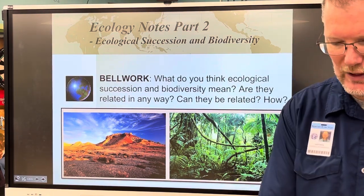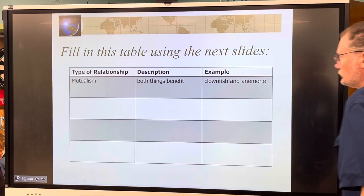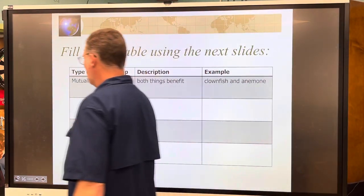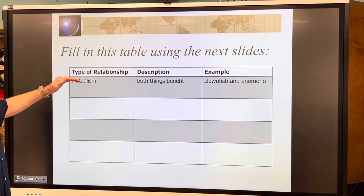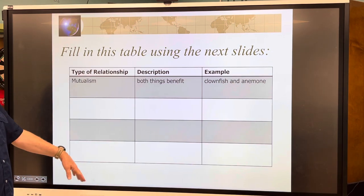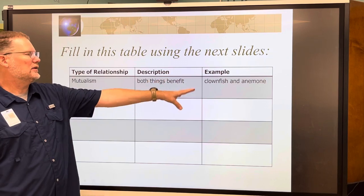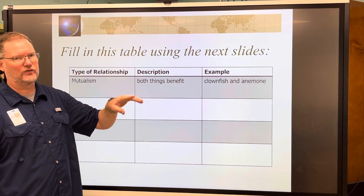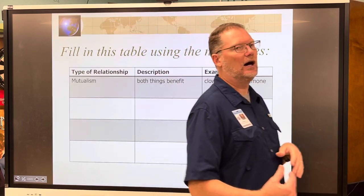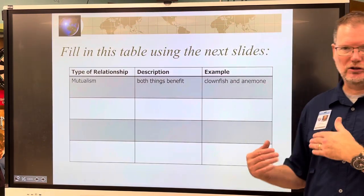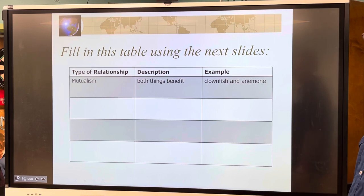These are the last notes we have for this unit. The first one is filled out for you — the chart has columns for the type of relationship, a very brief description, and one example. If you can come up with one example and understand what it means, we've covered this part already, so we won't spend too much time on it.